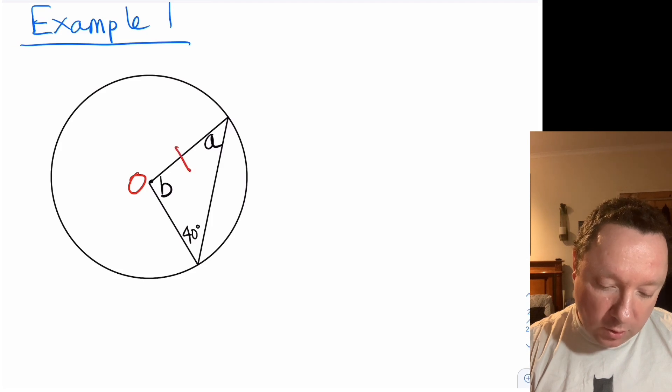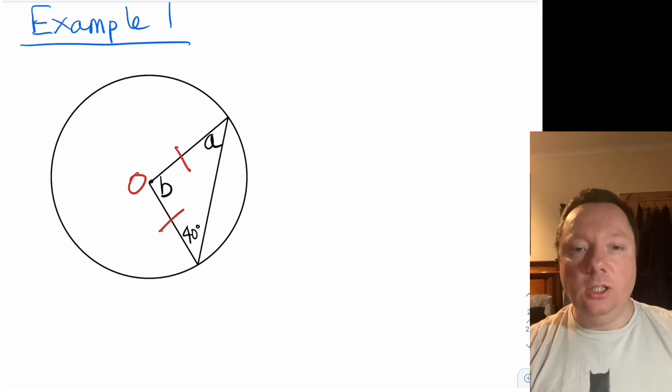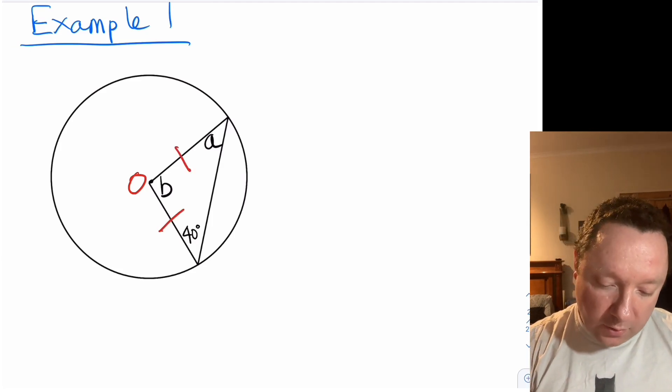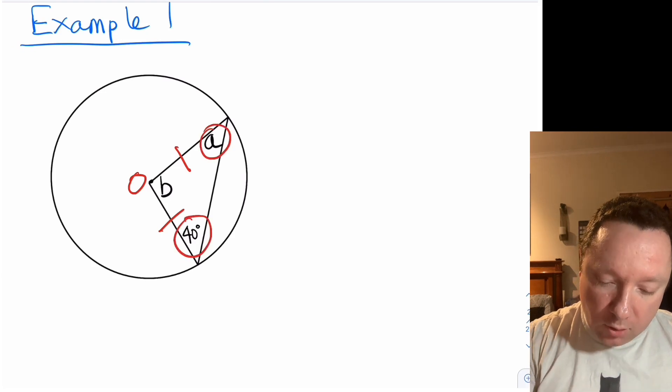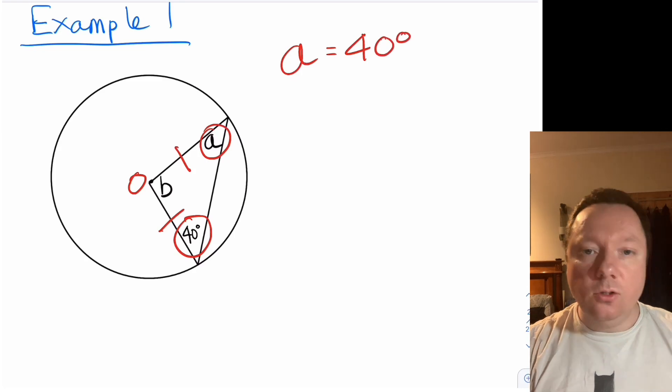You can just note with dashes, so those two are the same, which means those two angles down here are the same. So we've got straight away that a is 40 degrees because of isosceles triangle.